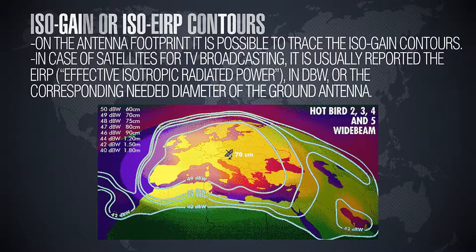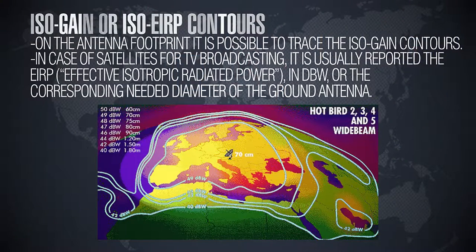In general, given an antenna footprint, we can define the so-called isogain contour lines. These are the locus of places over the earth where the gain of the antenna is the same. The isogain contours define areas where the satellite antenna is illuminating the earth with the same directivity or gain — which is especially relevant for satellite TV broadcasting.